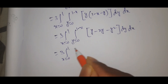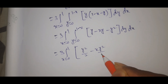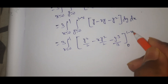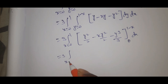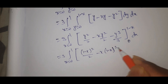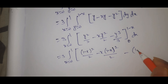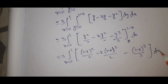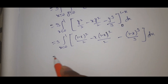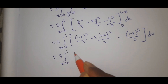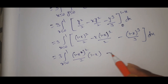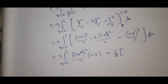Taking 3 as a constant outside: 3 times the integral x from 0 to 1, y from 0 to 1 minus x, of y times [z] evaluated from 0 to 1 minus x minus y, dy dx. This gives 3 times the integral x from 0 to 1, y from 0 to 1 minus x, of y(1 minus x minus y) dy dx, which expands to y minus xy minus y-squared, integrated. After integrating with respect to y: y-squared/2 minus x(y-squared/2) minus y-cubed/3, evaluated from 0 to 1 minus x.